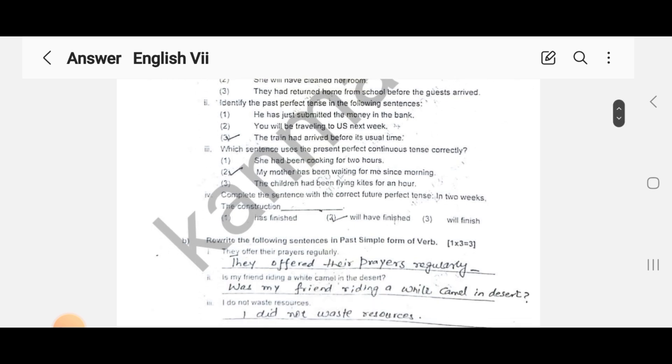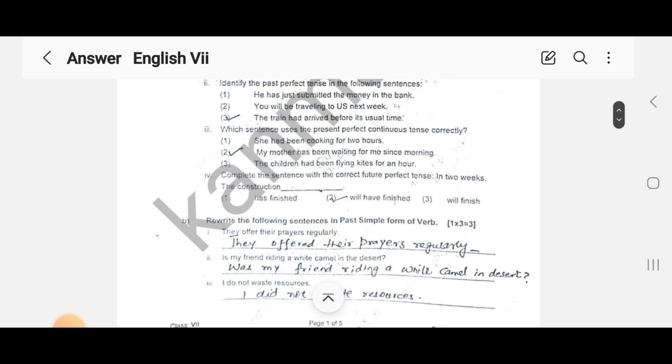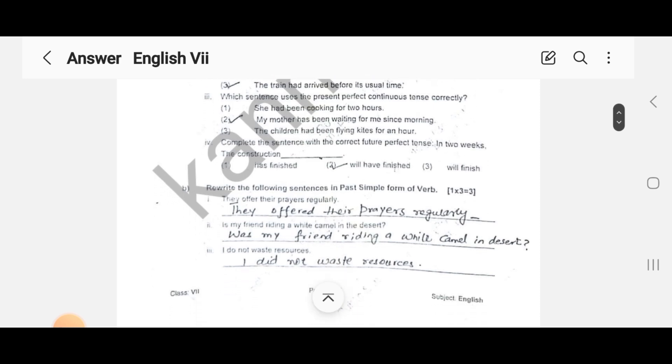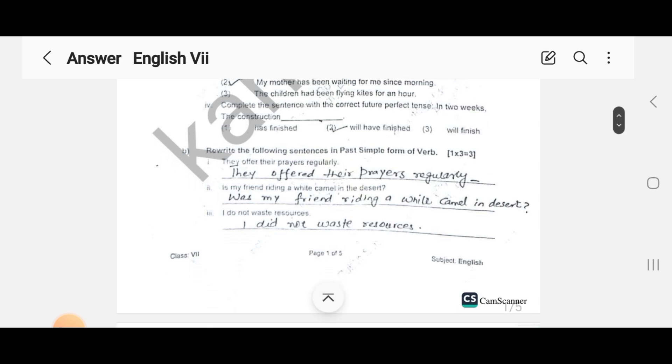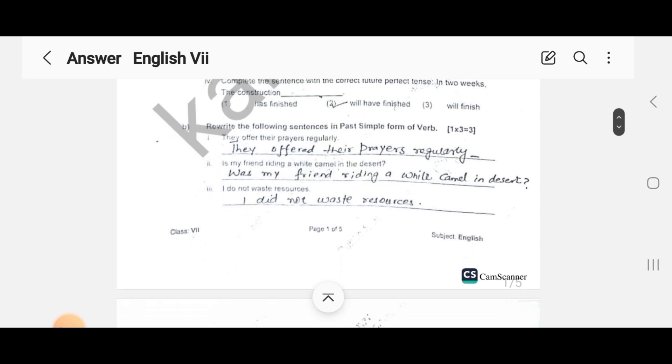In question number two, rewrite the following sentence in past simple form of verb. In the first, 'they offered their prayers regularly', so we change to past simple: 'they offered'. In the second, 'is my friend', we change to past simple. Then 'I do not waste' becomes 'I did not waste'.